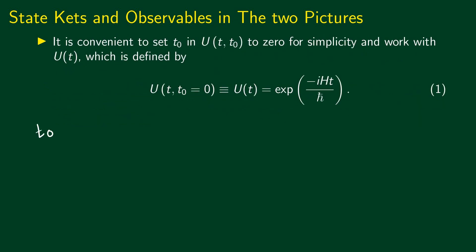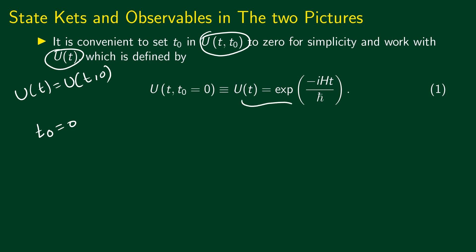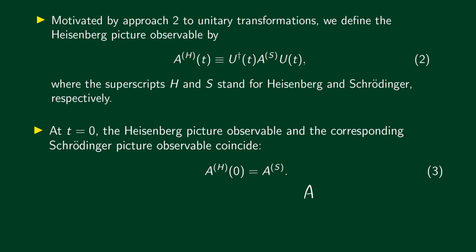For convenience, let's set t₀ equal to 0 in the time evolution operator and denote it simply as U(t), where U(t) stands for U(t, 0). The form of this time evolution operator is exp(−iHt/ℏ), as we have already seen. This is the form of the time evolution operator when the Hamiltonian does not depend on time.